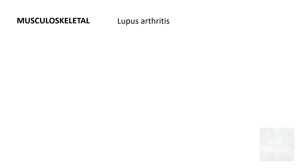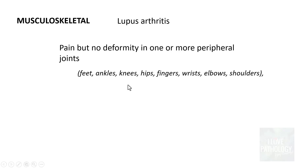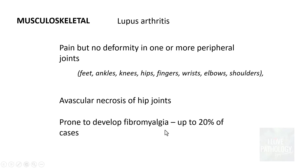The next important manifestations are musculoskeletal, referred to as lupus arthritis, where patients often present with pain but without deformity. The pain can affect one or more peripheral joints — feet, ankles, knees, hips, fingers, wrists, elbows, and shoulders. Sometimes patients manifest with avascular necrosis of the hip joints. In around 20% of cases, patients with SLE are prone to develop fibromyalgia.